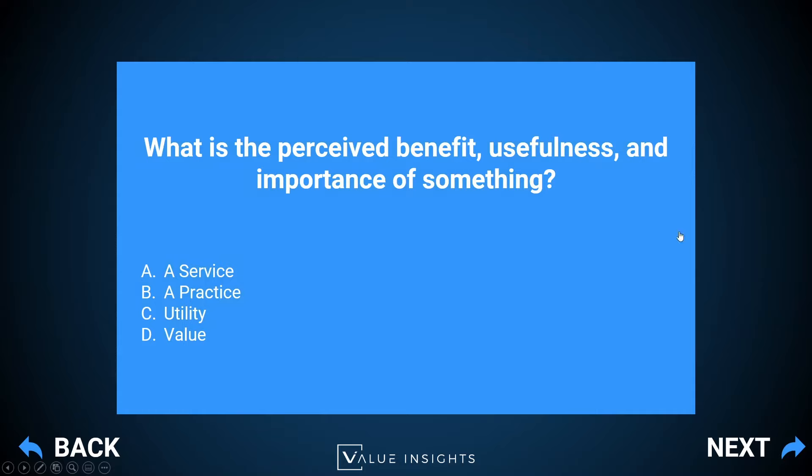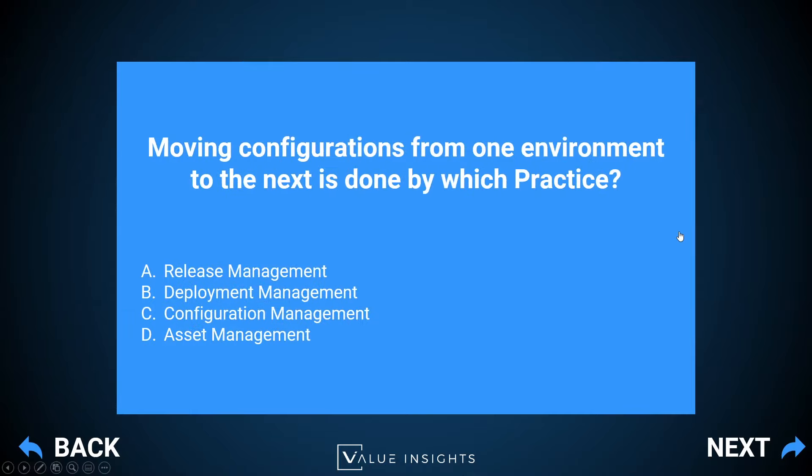Question eight: what is the perceived benefit, usefulness, and importance of something? The correct answer is D — it is value. A service is the means of enabling value co-creation with customers. A practice is a configuration of resources that transforms input into output. Utility is part of value — it tells us how useful a service is, but it's not the only part. Value is the perceived benefits, and it's important to highlight the word perceived: you can have the best utility and the best warranty, but if customers have bad experiences with your service, you will have a hard time.